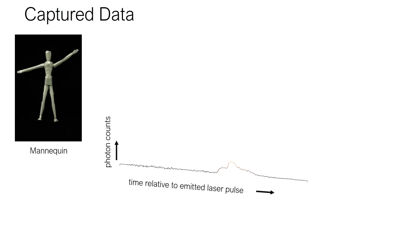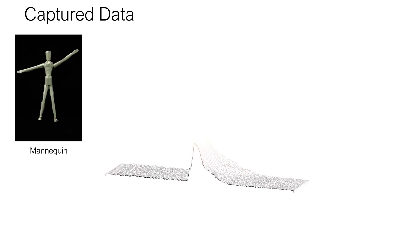Here's an example of a measurement we recorded with our prototype. When the mannequin is in an unknown location in the hidden space, we record a transient that contains time-resolved photon counts relative to the emission of a laser pulse. Without object motion, the information contained in such a measurement is insufficient to estimate the scene.